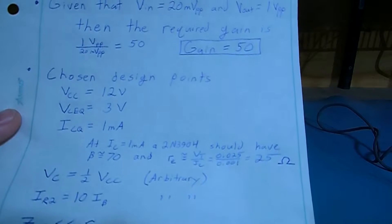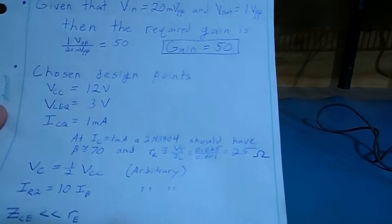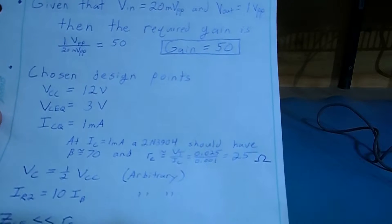So it is simply calculated by taking VT, which is a constant of 0.025 volts, and dividing it by the collector current of 1 milliamp, which gives us 25 ohms.